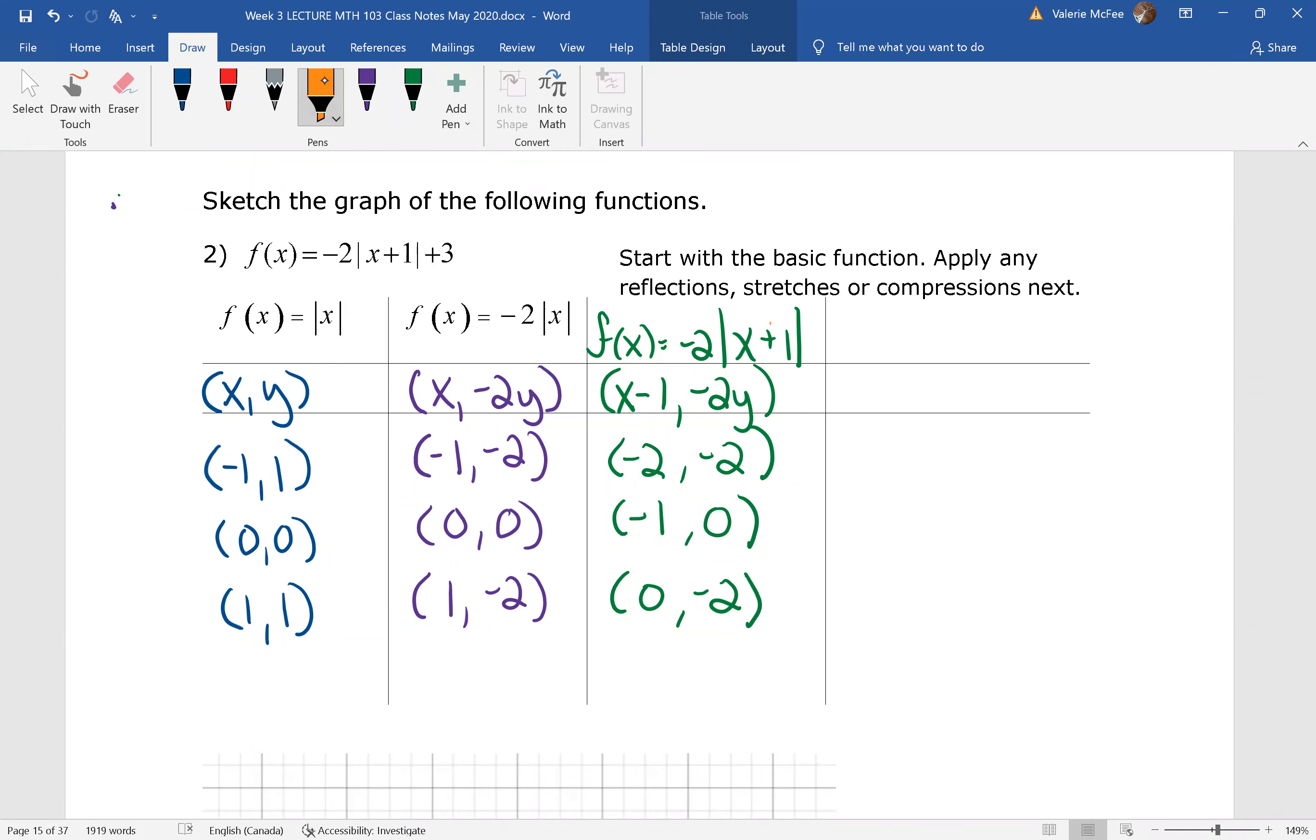Find those ordered pairs. I hope you remembered because we had a plus 1 here that we would be subtracting 1 from our x coordinates. You should also remember we had negative 2y, so these y values didn't change. All we did in this step was subtract 1 from the x coordinates.